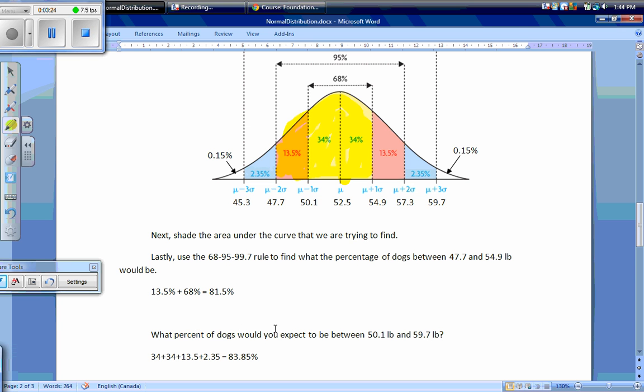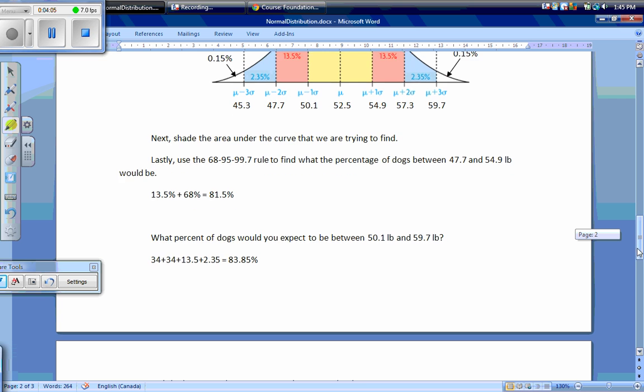What percent of dogs would you expect to be between 50.1 pounds and 59.7 pounds? That works out to 34% plus 34% plus 13.5% plus 2.35%, which equals 83.85% of dogs between 50.1 pounds and 59.7 pounds.